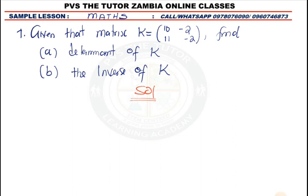Alright, let's move to the questions. So that's our matrix K. Let us find the determinant. The determinant of the matrix is equal to the difference between the major diagonal. So the major diagonal we have 10 multiplied by -2 minus the minor diagonal is -2 multiplied by 11.